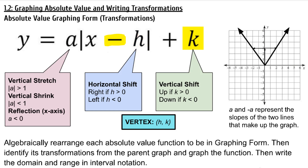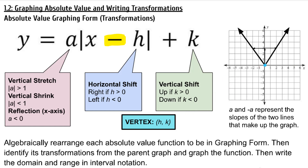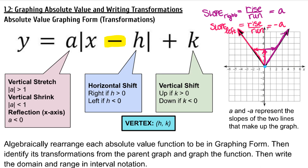The vertical shift is very straightforward. We go up if K is positive and down if K is negative. H and K — your horizontal shift and your vertical shift — give you the location of your vertex, the point where these two lines meet. Once you've graphed your vertex, A and negative A represent the slopes of the two lines that make up the graph. The slope to the right of the vertex is A, and the slope to the left is negative A. So once our function is in graphing form, we can simply use the vertex and A to create the graph.